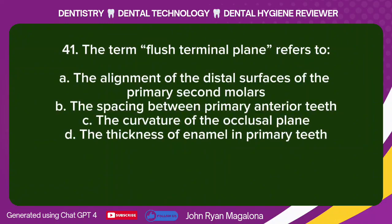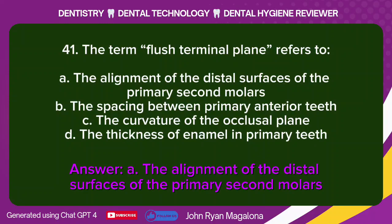Question 41: The term 'flush terminal plane' refers to: A. The alignment of the distal surfaces of the primary second molars. B. The spacing between primary anterior teeth. C. The curvature of the occlusal plane. D. The thickness of enamel in primary teeth. Answer: A. The alignment of the distal surfaces of the primary second molars.